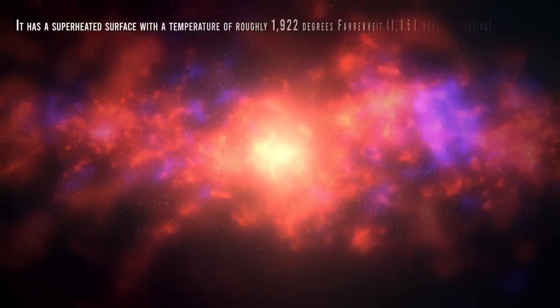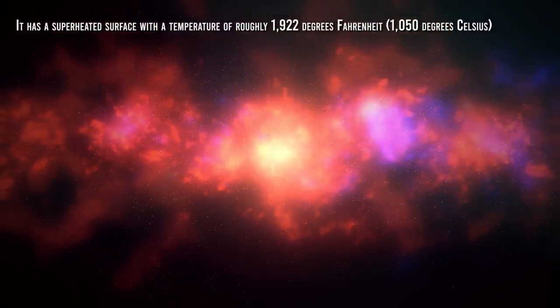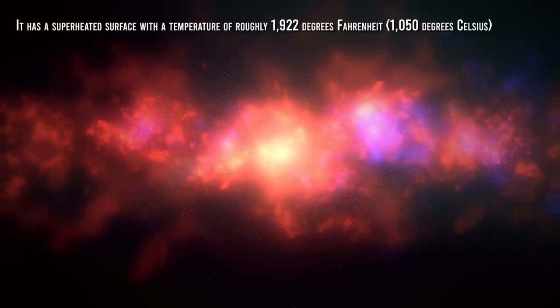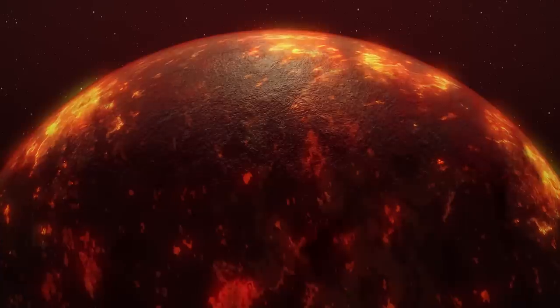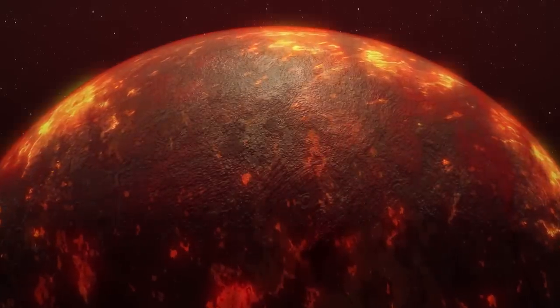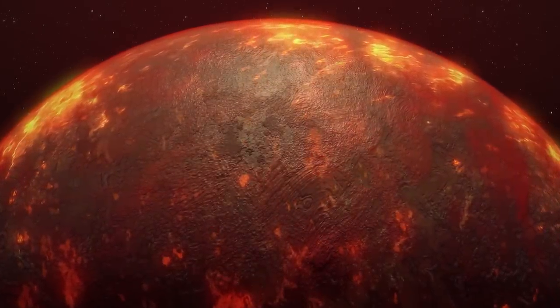Exoplanets are often labeled with characteristics that relate them to planets closer to home. Hot Jupiters, for example, are gas giants that orbit close to their parent stars.